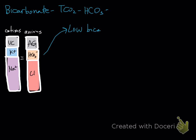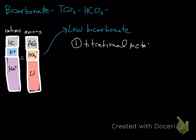A low bicarbonate or low TCO2 can be due to two things. One of them is titration — you can use bicarbonate, and its main job in the body is to titrate away acids. If there's excess acid causing titration of bicarbonate, we call that a titrational metabolic acidosis, because a low bicarbonate equals an acidosis on the metabolic side.